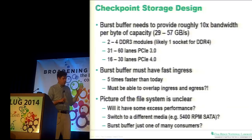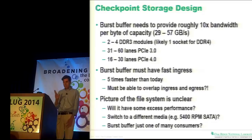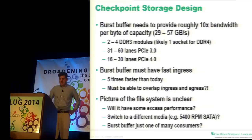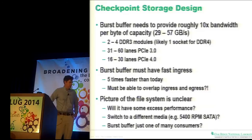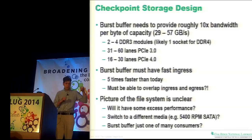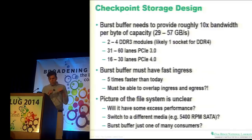I tried to figure out what could deliver 29 to 57 gigabytes per second. Using today's technology, that would be two to four DDR3 modules, probably two sockets. That's about 31 to 60 PCIe 3.0 lanes — almost definitely two sockets. With PCIe 4, which would be the technology of the time, maybe you have a single socket solution, though you'd still be jacking into the communications network on both sides. How to manage that traffic is still really interesting.